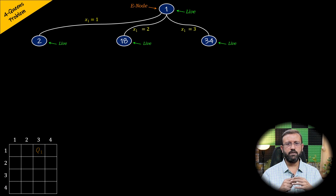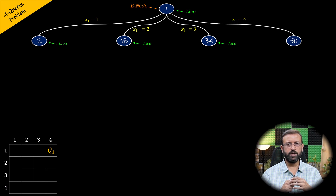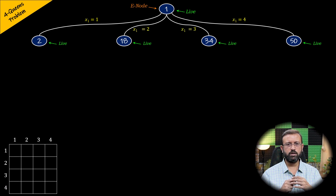Finally, there is the possibility of placing queen 1 in row 1 and column 4, so x1 will be 4 and we are at node 50 of the state space tree. Node 50 is added to the list of live nodes. We have now considered all the possibilities of placing queen 1 in row 1 across all columns, so all the children of node 1 are generated.